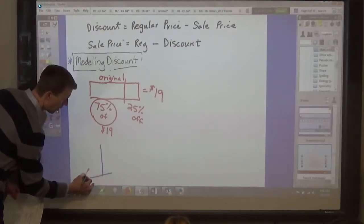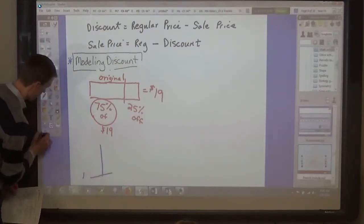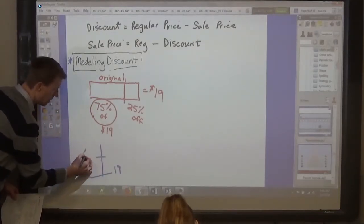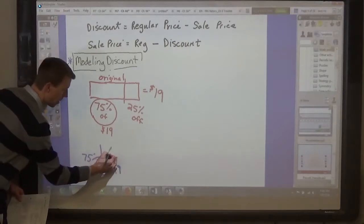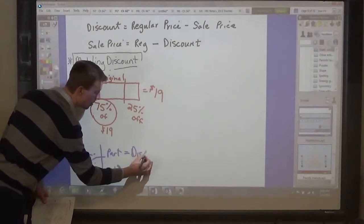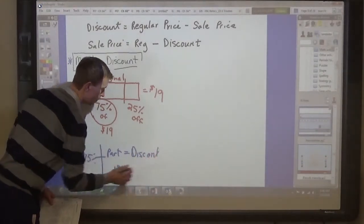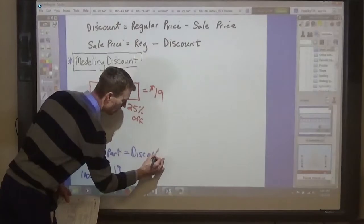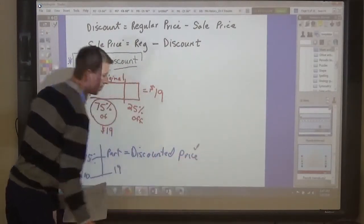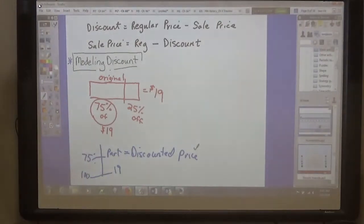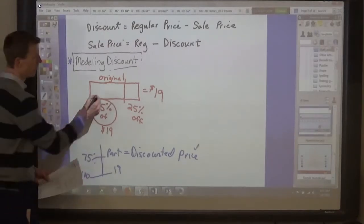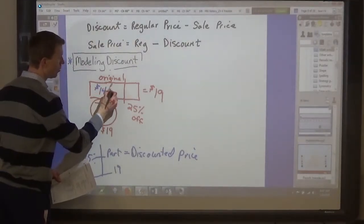So if the original price is $19, and that's 100%, then 75% is the part. The part is the discount, the discounted price. So what is 75% of 19? It's $14.25.